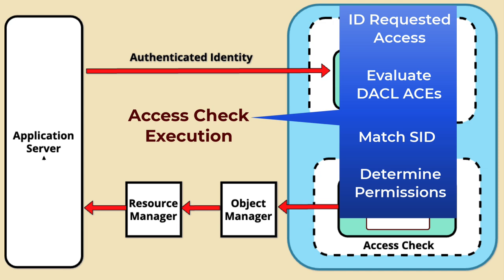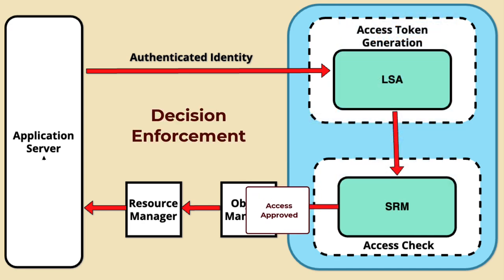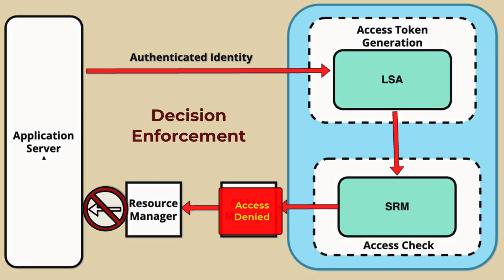If any ACE explicitly denies the requested access, the SRM denies the request. If no ACE explicitly denies the access and at least one ACE allows it, the SRM grants the request. Decision Enforcement: the SRM returns the decision to the object manager. The object manager grants access to the resource if it is allowed and works with the resource manager to allocate needed resources. If access is denied, the object manager blocks the request and returns an error to the requesting process. This step ensures that the decision made by the SRM is enforced, maintaining the integrity of the security policies.